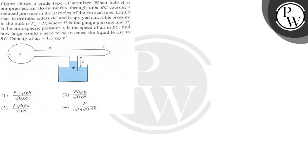So here we know pressure P atmospheric plus P. Suppose here pressure is PBC. So this pressure we can write as PBC equal to P atmospheric minus rho GH.